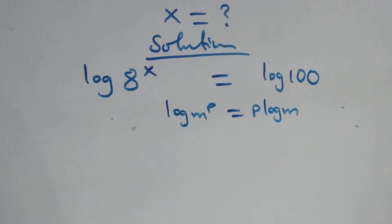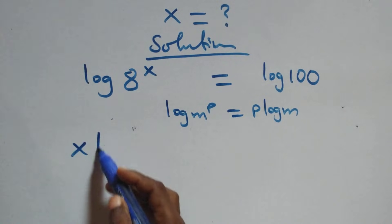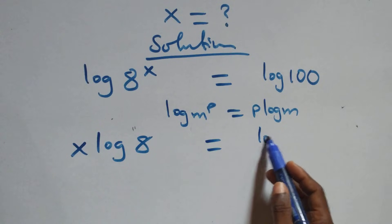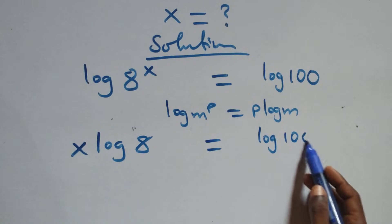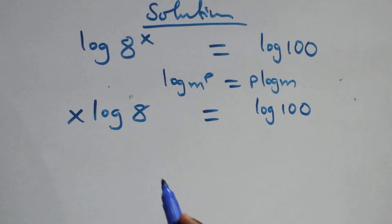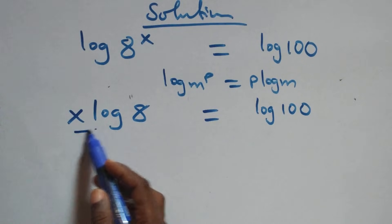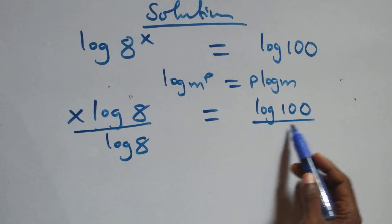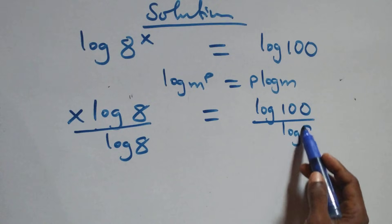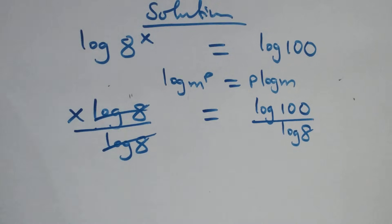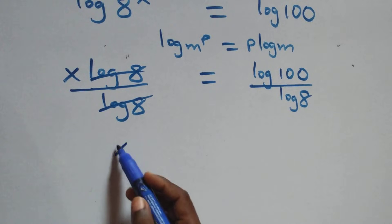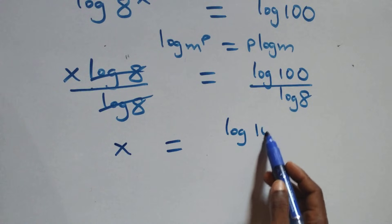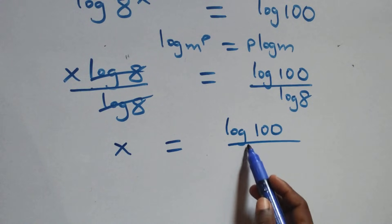So what we have here becomes x times log 8 equals to log 100. From here, we divide both sides by log 8 — divide this side by log 8 and also divide this side by log 8 — which implies that log 8 cancels, and we have x equals to log 100 over log 8.